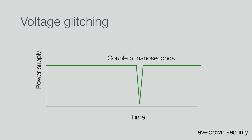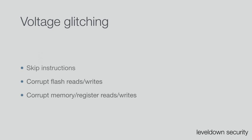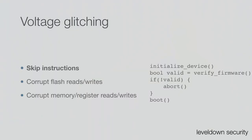This causes interesting behavior: a glitch can allow you to skip instructions, corrupt flash reads or writes, and corrupt memory or register reads and writes. Skipping instructions is the most interesting because it allows you to go directly from disassembly to understanding what you can potentially jump over. For example, in a basic firmware boot-up: you have an initialize_device function, a function that verifies the firmware in flash, and a boolean check whether the firmware is valid. If we glitch at just the right time, we might be able to glitch over that check and boot compromised firmware.